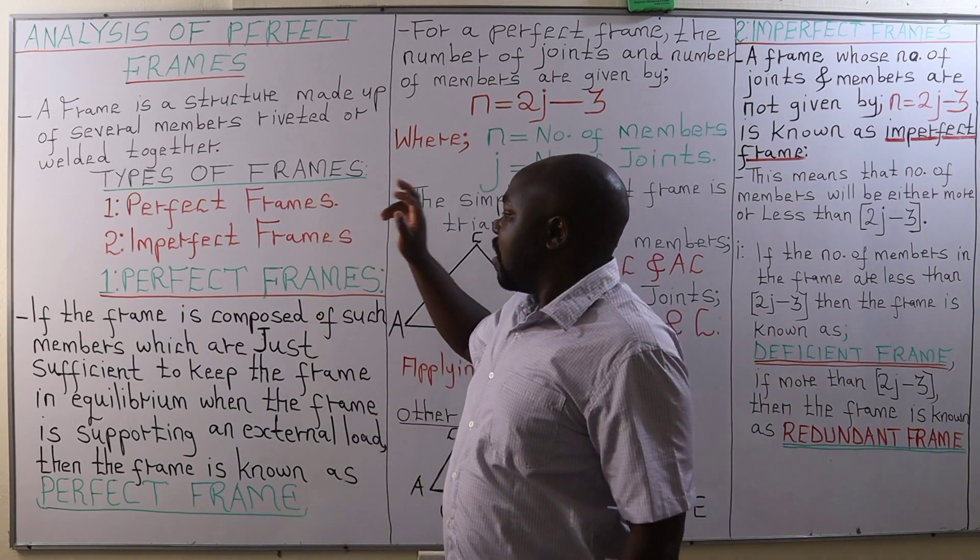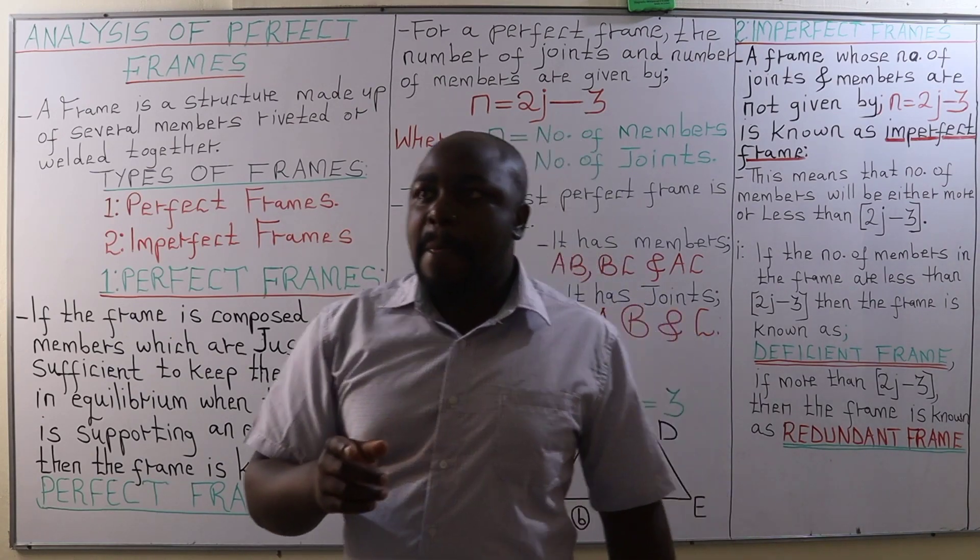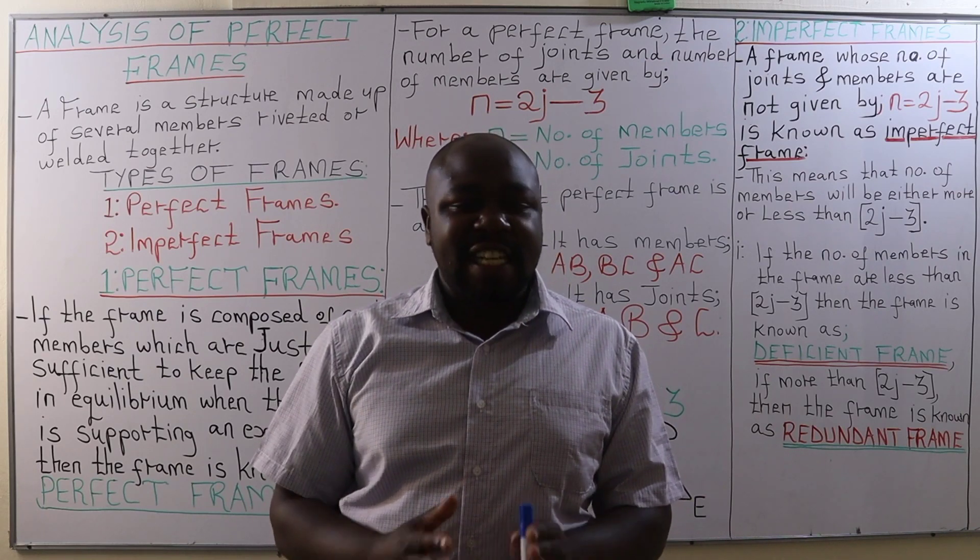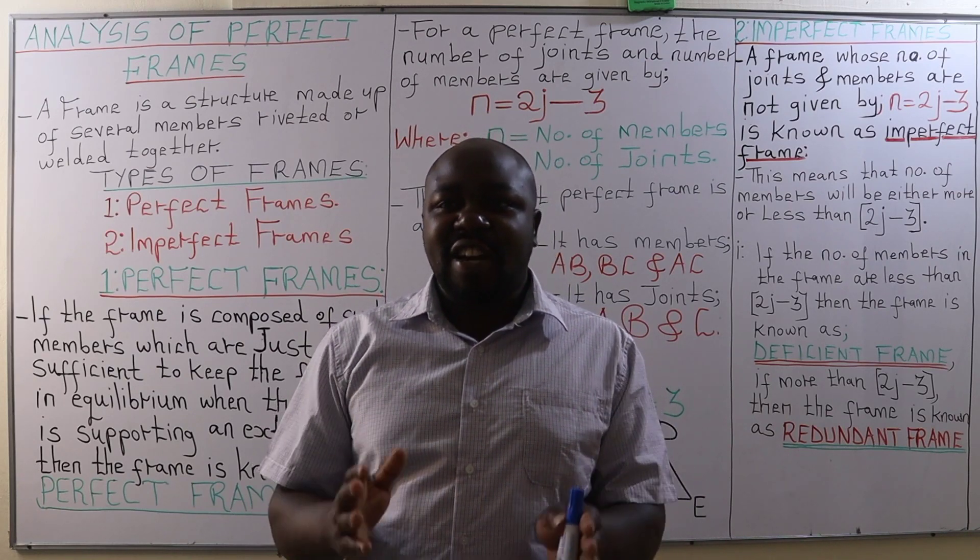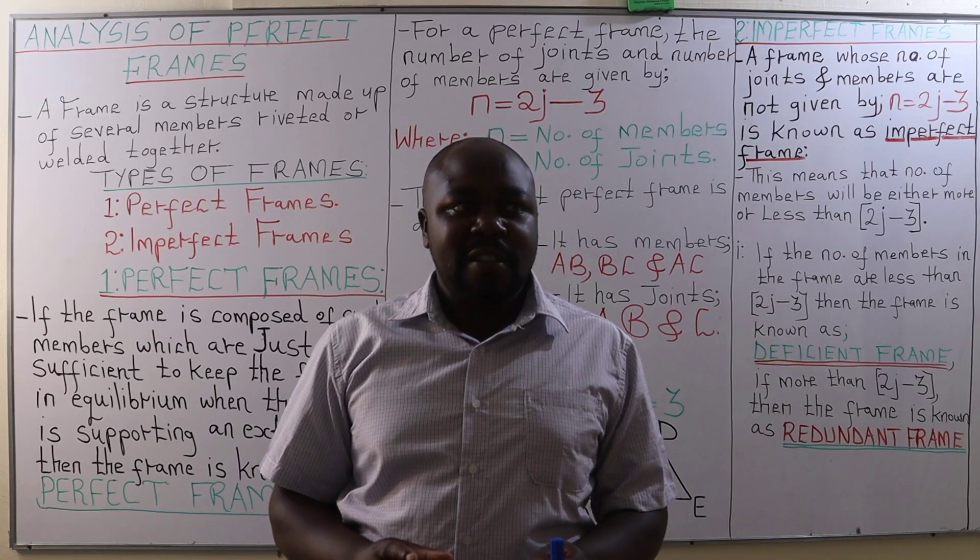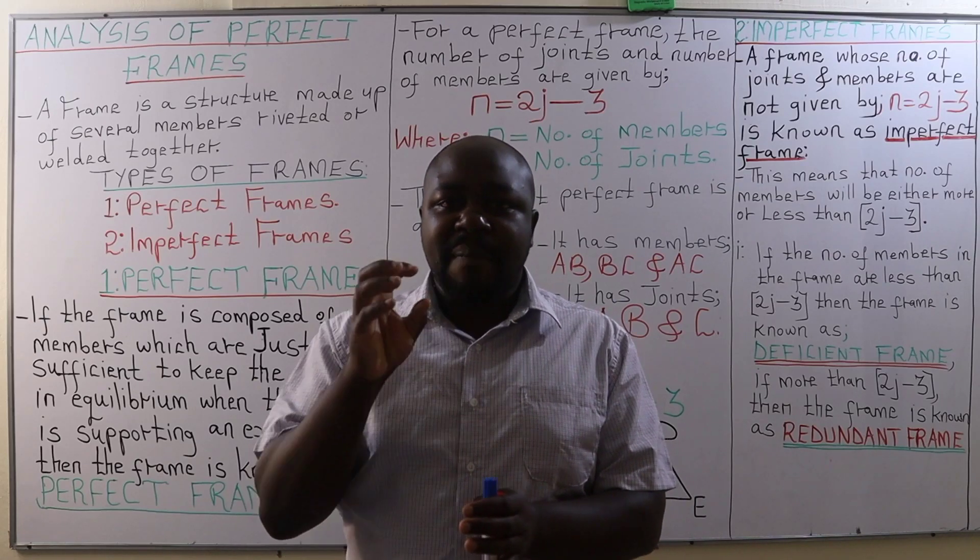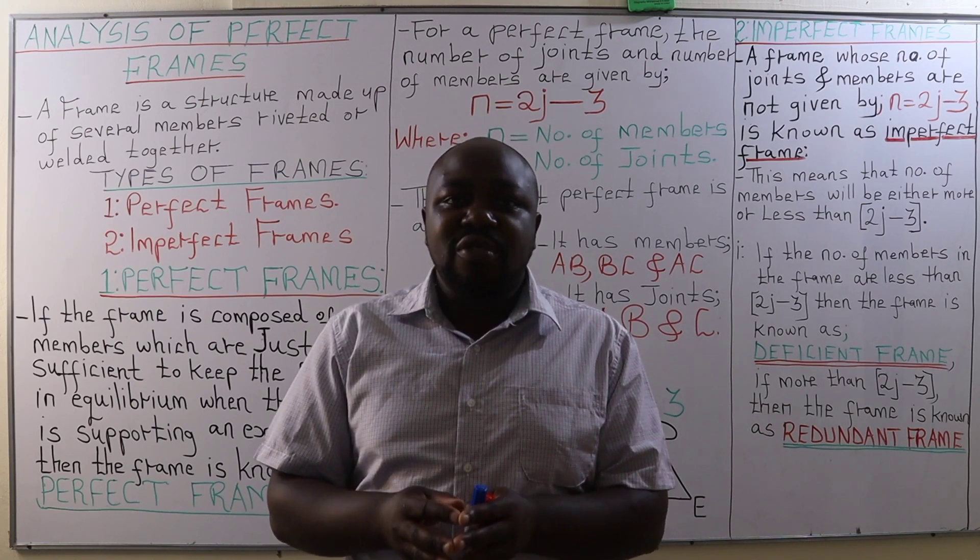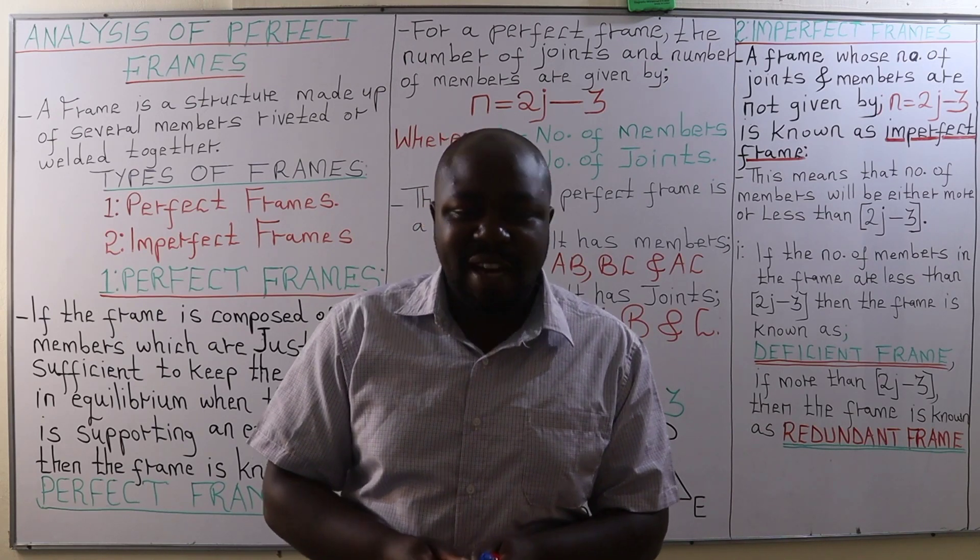A good example of a frame is like a truss, a steel truss. For that truss, the members of the truss are usually welded together or some of them are riveted together.